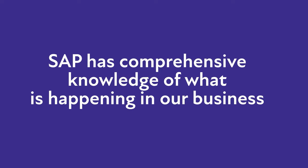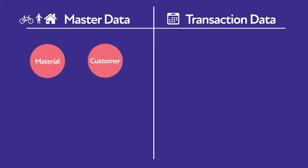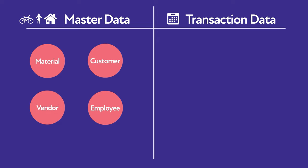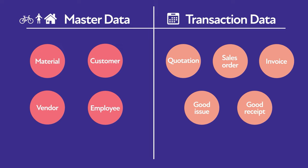Let's go back to our objects and see where they would be assigned. We have master data: material, customer, vendor, employee — people and things. And we have transaction data: for example, quotation, sales order, invoice, goods issue, goods receipt. Thousands of such documents are generated every day, because a lot of events happen in the system every day.